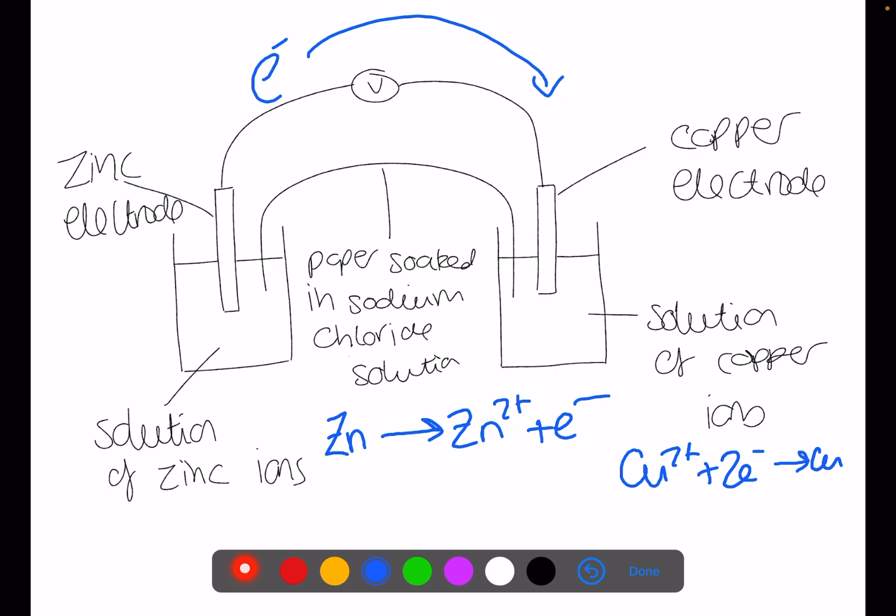Together we have a redox process where the zinc is reacting with the copper 2+ ions to produce zinc ions and copper atoms.